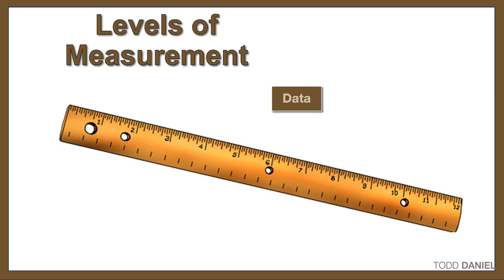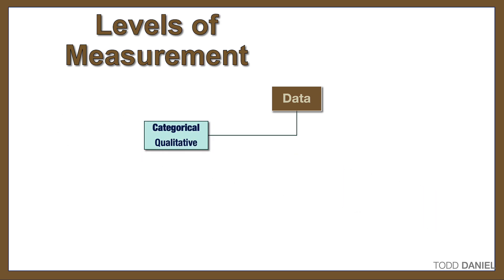It's all about the level of measurement of your data. We began with categorical data, which we also called qualitative data, because we create categories or groupings based upon some quality of the variable. We can use numbers to create categories, such as number one equals experimental group and zero equals control group. This is a nominal level.